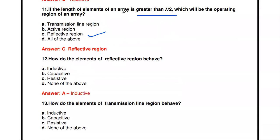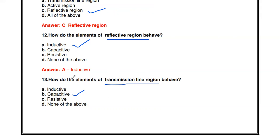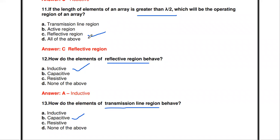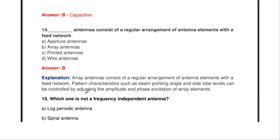How do elements of the reflective region behave? In the reflective region, elements have length greater than lambda/2, so they work as inductive in nature. How do elements of the transmission line region behave? In the transmission line region, elements behave as capacitive in nature. So: transmission line region — capacitive; active region — resistive; reflective region — inductive.